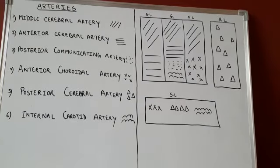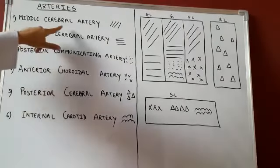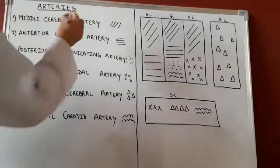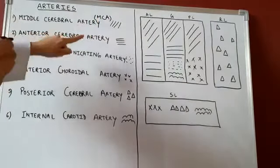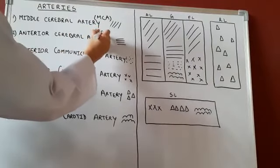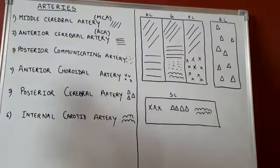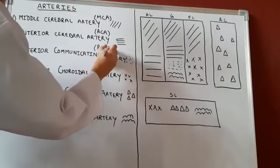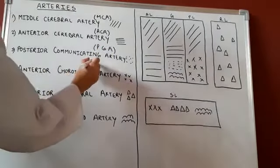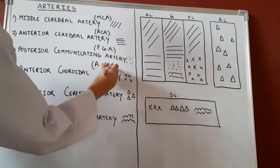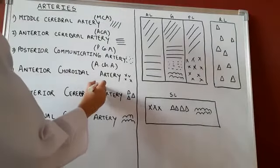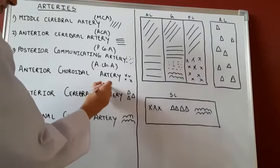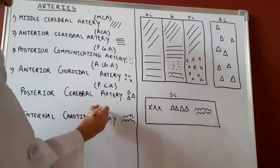Hi everyone. Today let's begin with discussing the blood supply of the internal capsule. In total, there are 6 arteries which supply the internal capsule. The first one is the middle cerebral artery or MCA. The second is the anterior cerebral artery, ACA. The third artery is the posterior communicating artery. Then you have the anterior choroidal artery, then the posterior cerebral artery, and lastly the internal carotid artery.